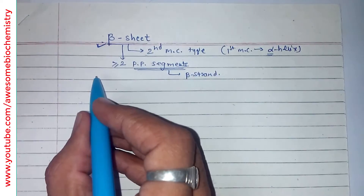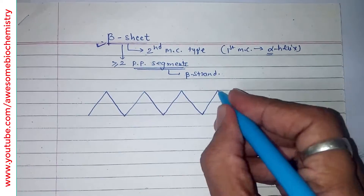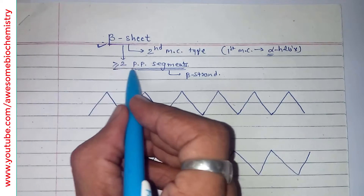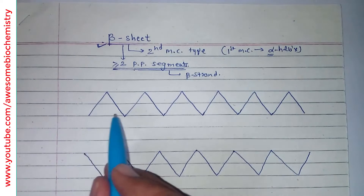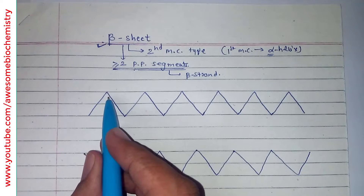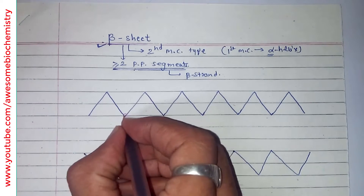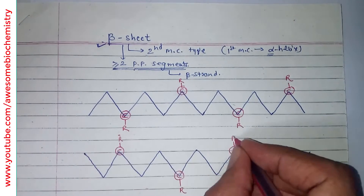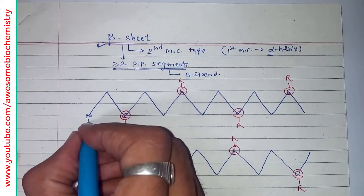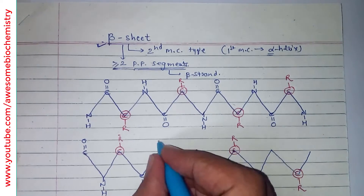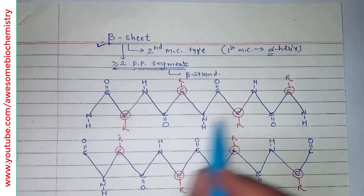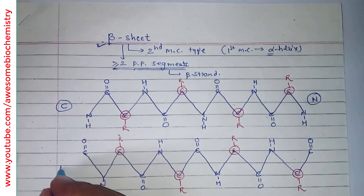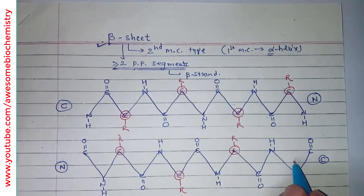To explain the beta sheet, I need to first draw its structure. Here I have drawn two polypeptide segments — remember, there can be more than two, but for illustration purposes I am drawing only two. The red marked is the alpha carbon, and this is the side chain of that alpha carbon. Now, let us draw the polypeptide bonds. This is the N-terminal and this is the C-terminal for the upper polypeptide segment, and this is the N-terminal and C-terminal of the lower polypeptide segment.